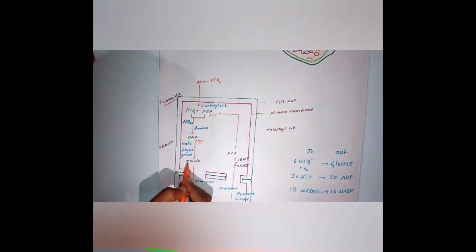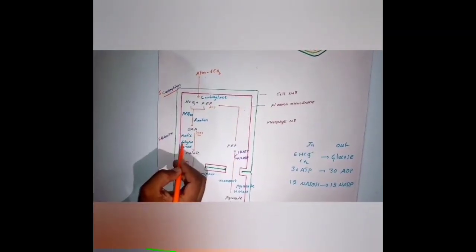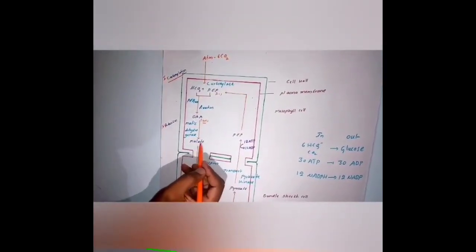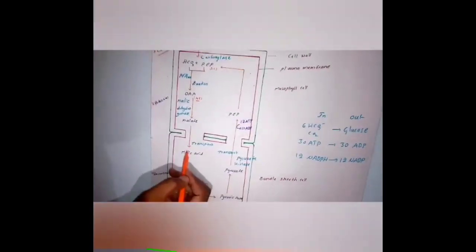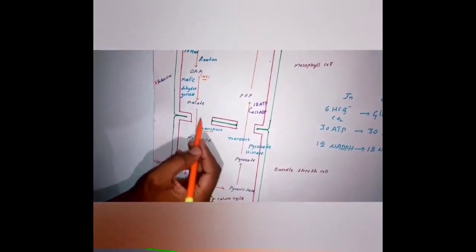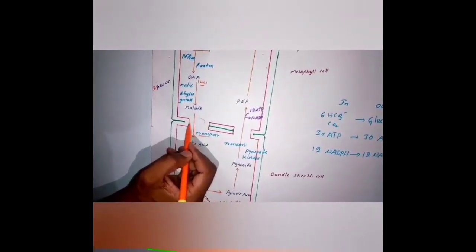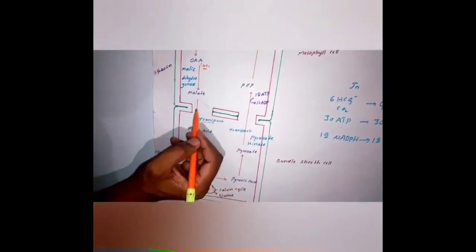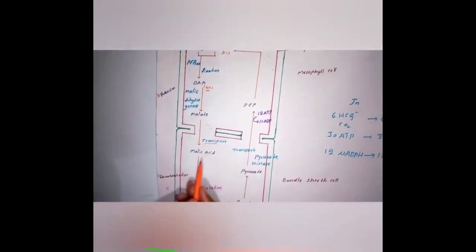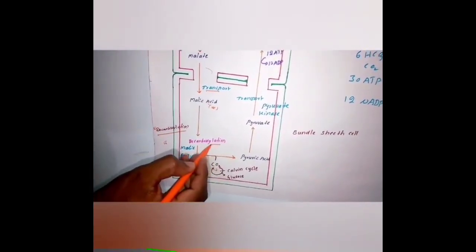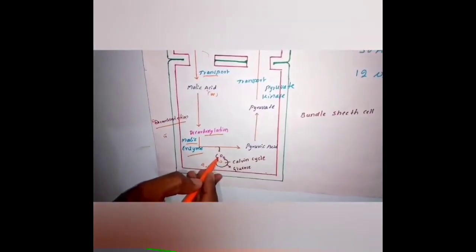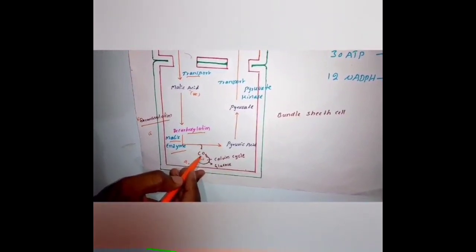This oxaloacetic acid is converted into malate in the presence of malic dehydrogenase enzyme. The malate or malic acid or aspartic acid is transported from mesophyll cells to the bundle sheath cells through plasmodesmata — small gaps connecting one cell to another, present only in plant cells. The malic acid, which consists of four-carbon compounds, loses one carbon dioxide by the decarboxylation process in the presence of malic enzyme. Out of four carbons, one carbon is released as carbon dioxide gas, which is now available in the bundle sheath cells.